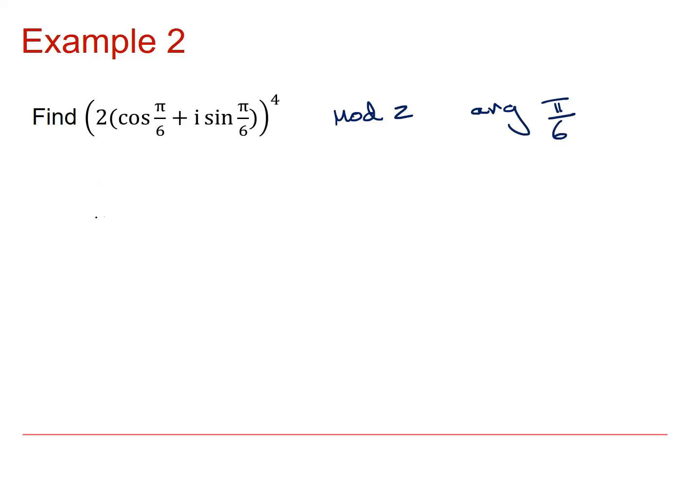So this to the power of 4 is going to give me 2 to the power of 4 times cos, an argument of 4 times pi by 6, plus i sine. Again, 4 pi by 6.